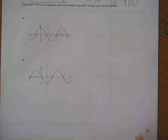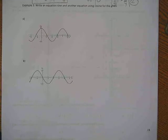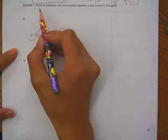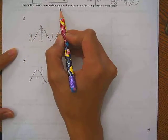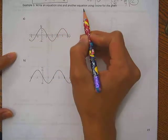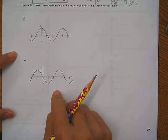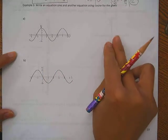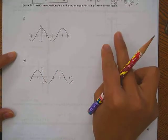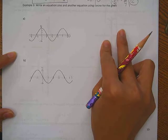Hey guys, we are going to continue with example 3. Our direction is write an equation sine, and another one, another equation using cosine for the given two graphs. So I want you to write two different equations. One is using sine function, and one is using cosine function.